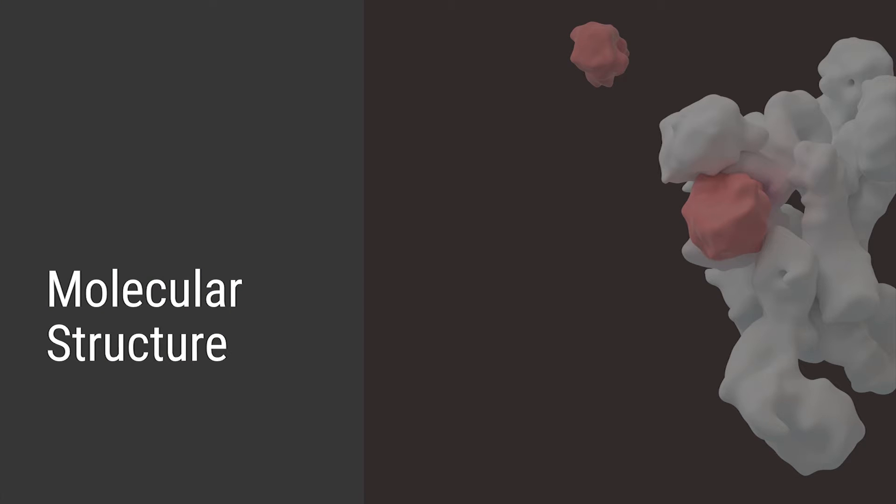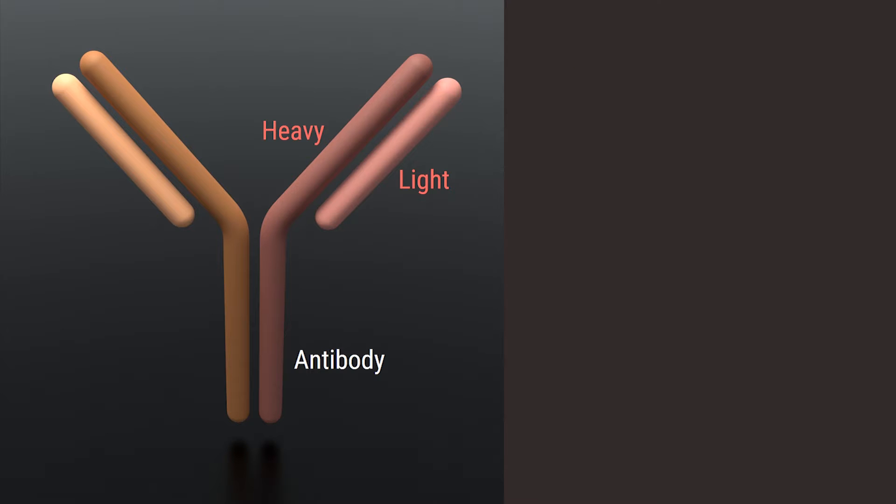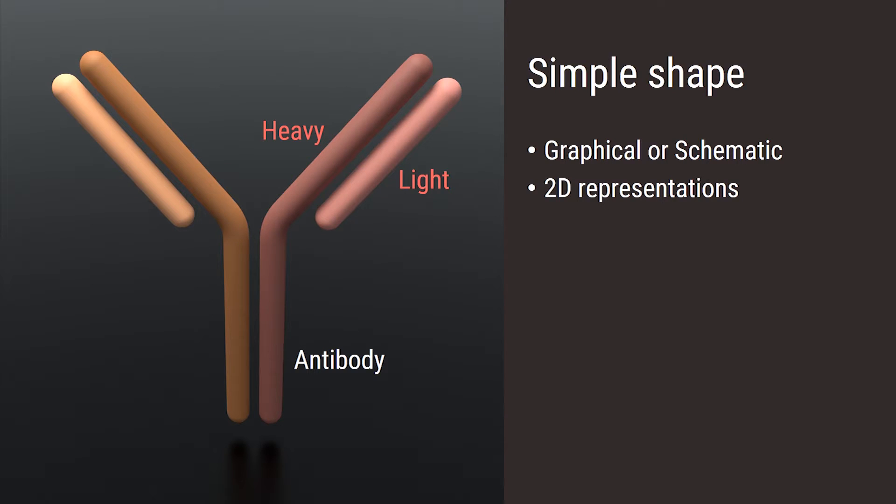When we visualize macromolecules there are lots of established options for how we can represent their structure. Let's take the example of an antibody, a protein complex that has two heavy or long chains and two light or short chains. It's perfectly reasonable to use a simple shape to represent this. It sends the message that we're using a graphical schematic approach, and this is even more evident and appropriate when we're working in a two-dimensional representation.